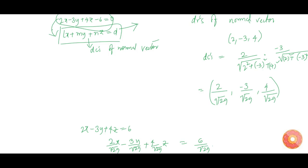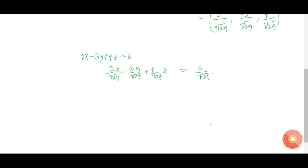This is nothing but Lx + My + Nz, which is equal to d. Now the distance from the origin is nothing but 6 by under root 29. This is our answer.